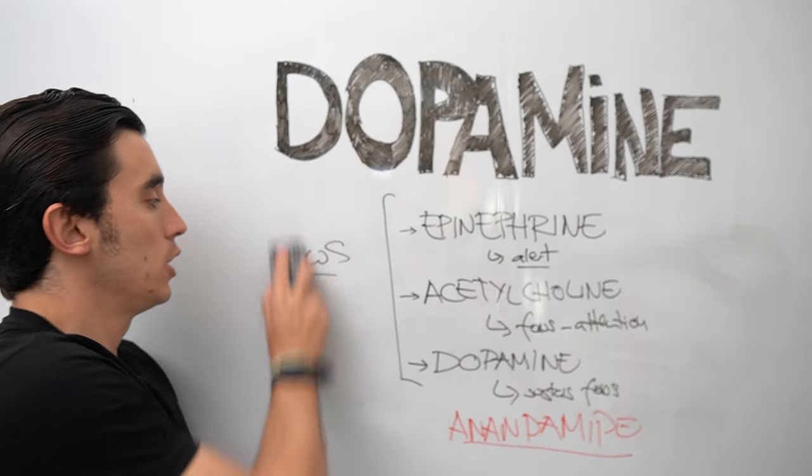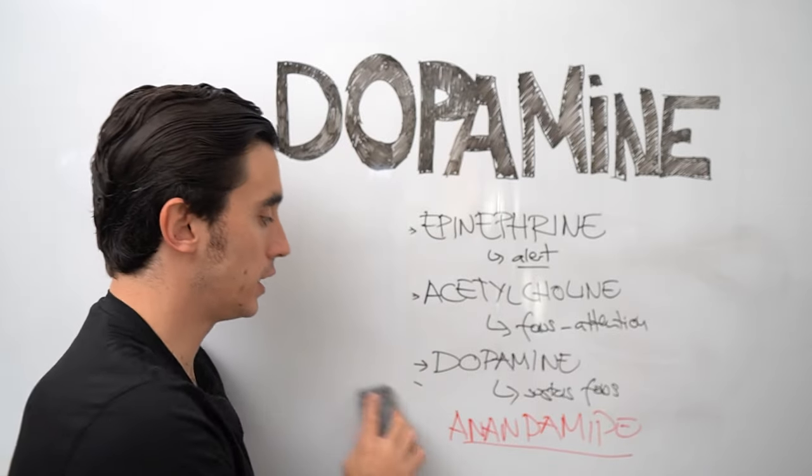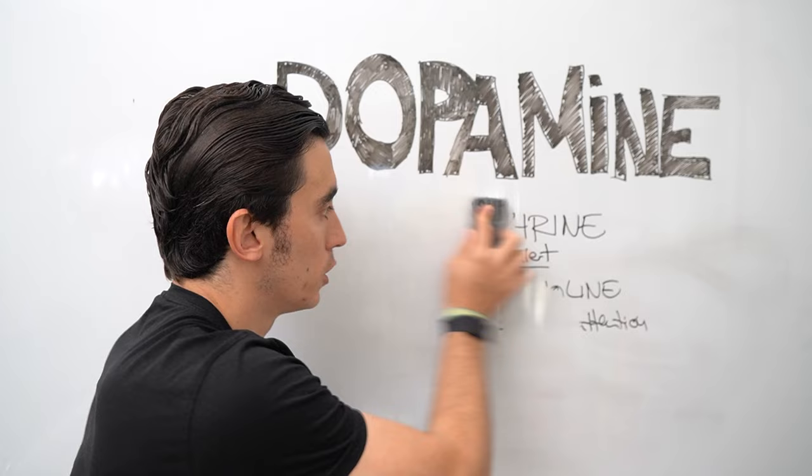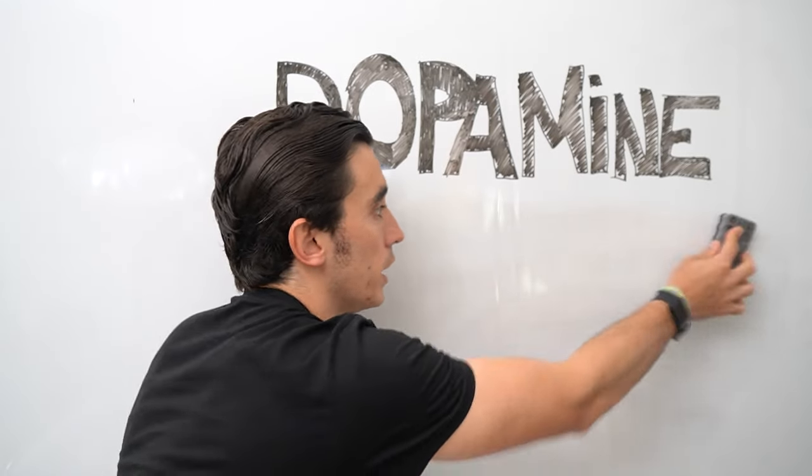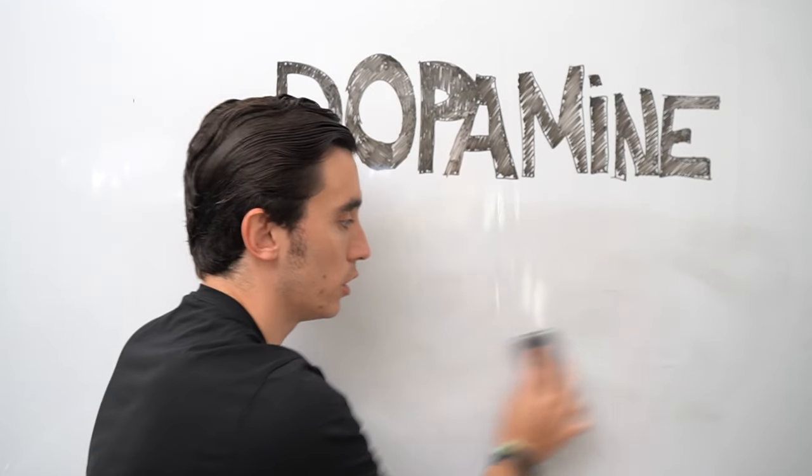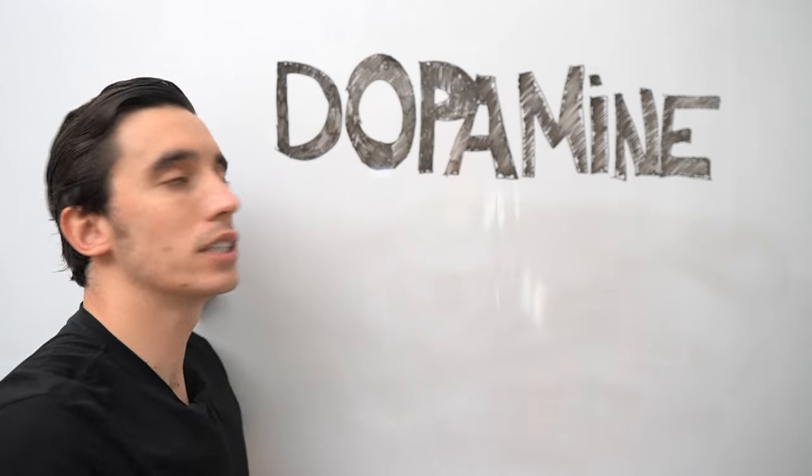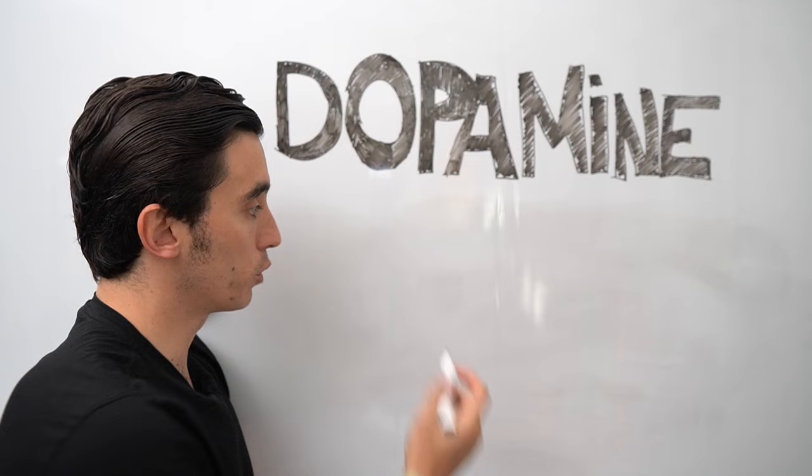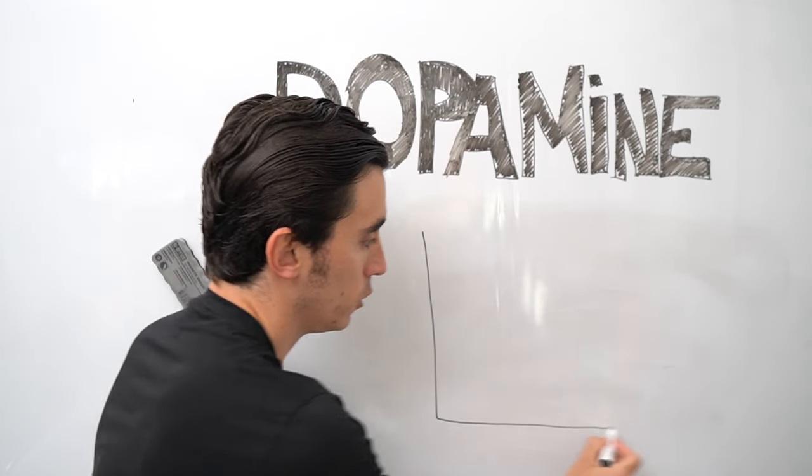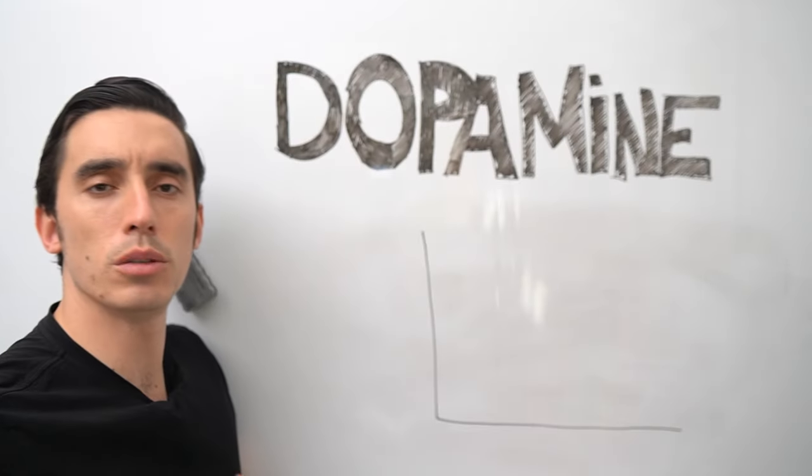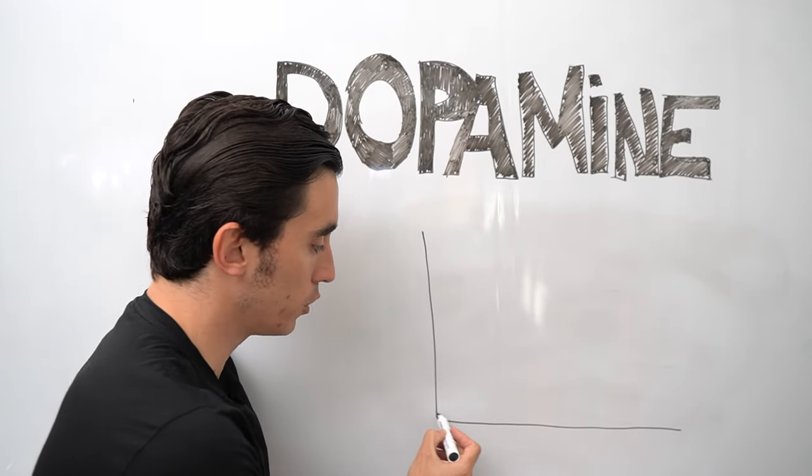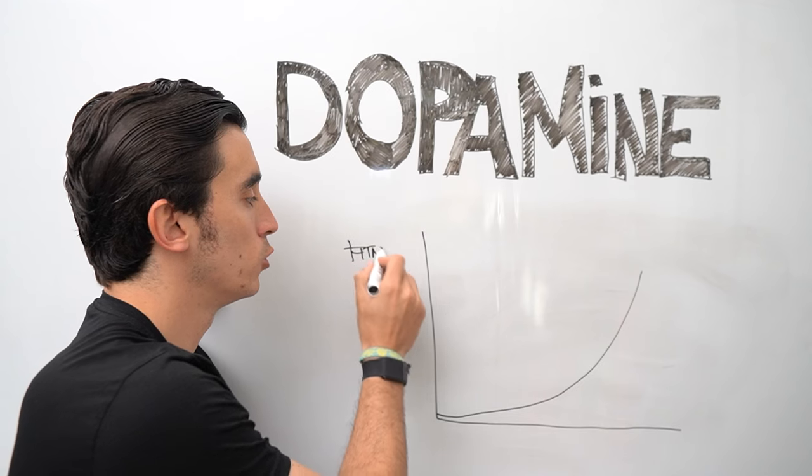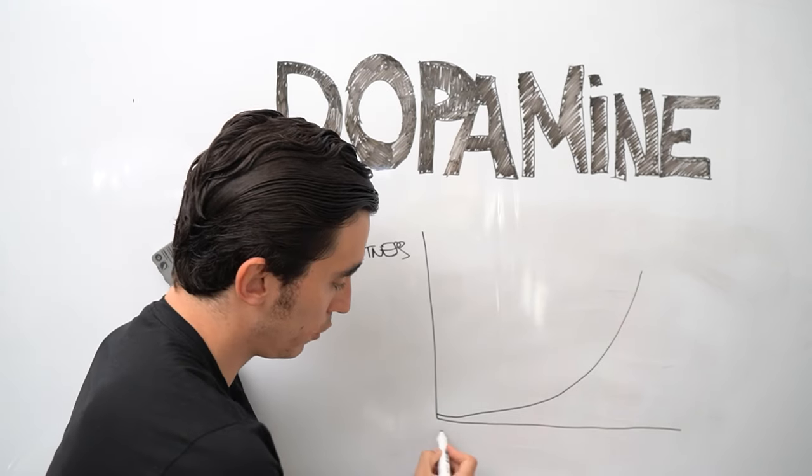So this is why dopamine is important. It allows you to sustain a behavior, to sustain a work session, because it's signaling the brain there is some sort of payoff at the end. And this is a very important word: payoff. The problem with the brain is that it's naturally wired to look for rewards, but most behaviors that are good for us take a long time to provide some sort of reward. So assuming we're going to the gym every day, if you go to the gym one day, nothing's going to change. In order for you to get fit, you need to be able to wait a few months.